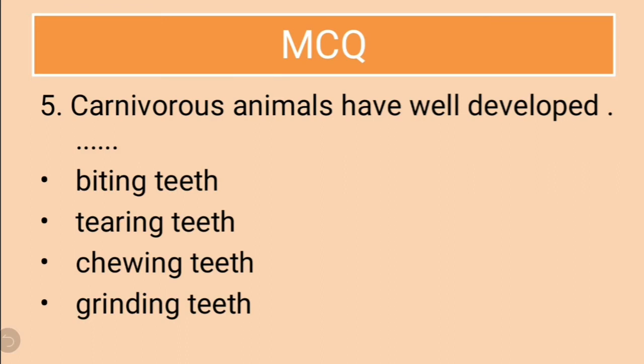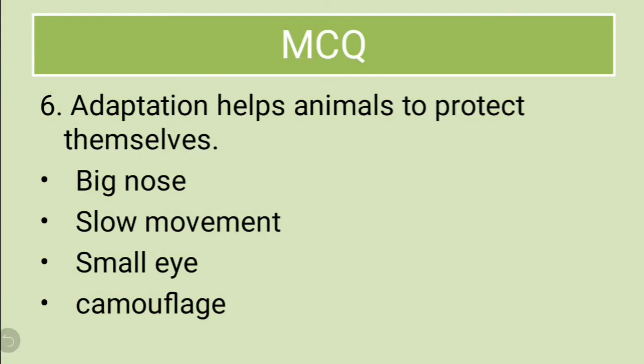Fifth question: carnivorous animals have well-developed blank. The options are biting teeth, tearing teeth, chewing teeth, or grinding teeth. Carnivorous animals have to hunt their prey in the jungle and tear raw flesh, so their tearing teeth are well developed. The correct answer is tearing teeth.